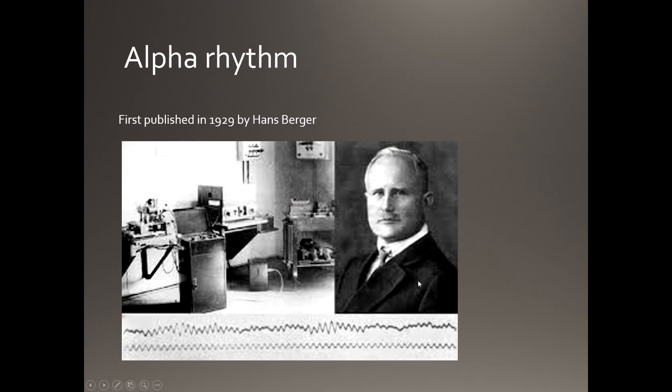The alpha rhythm was first published in 1929 by Hans Berger, and was obviously worked on for several years before that — so we're coming up towards nearly a centenary of this. He described it as the first rhythm that he could pick up, which is why it's known as the alpha rhythm and has that name. That's a picture of his laboratory.